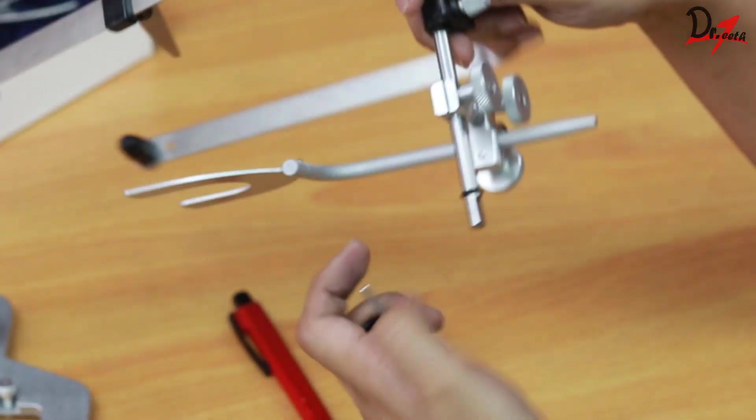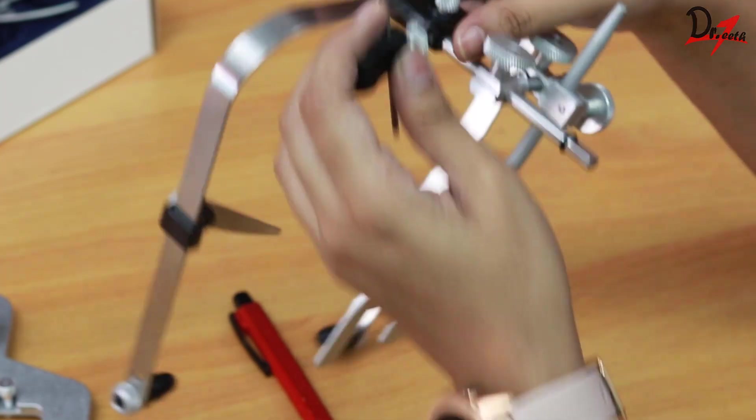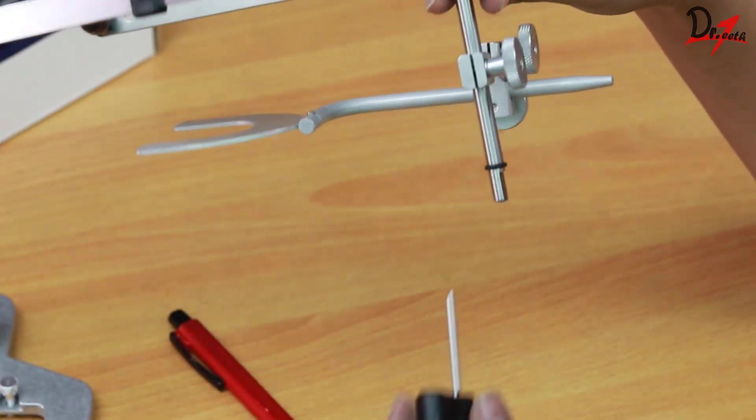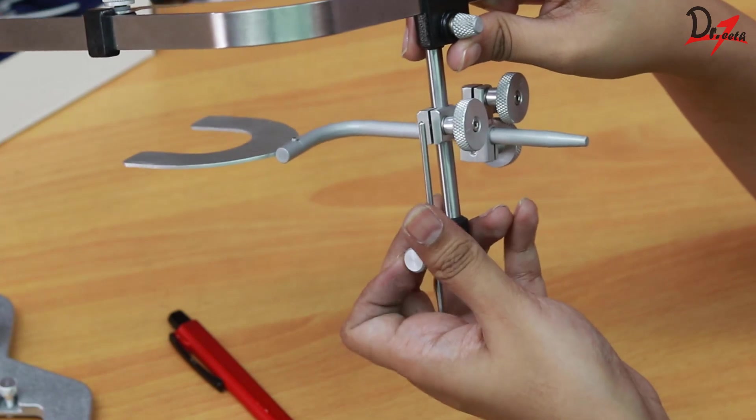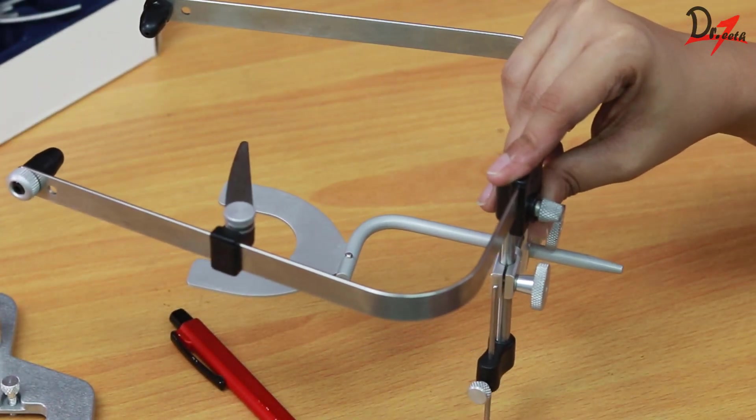Now, let us suppose we have made the adjustments and made the face bow record. Now we have to transfer it to the articulator. Again, I don't have the articulator with me right now to show you, so I would just like you to imagine. I'm sorry for that.